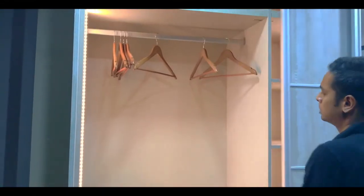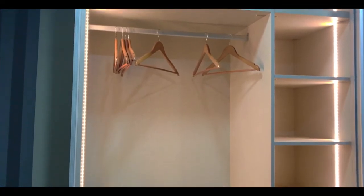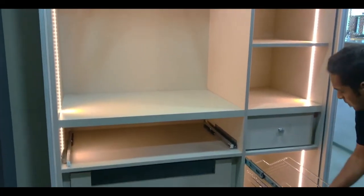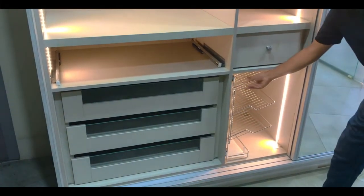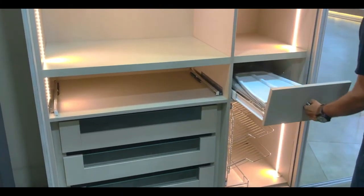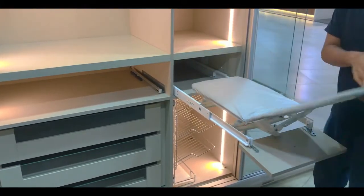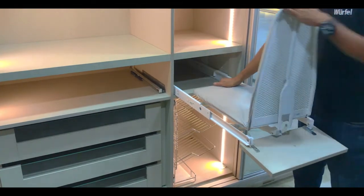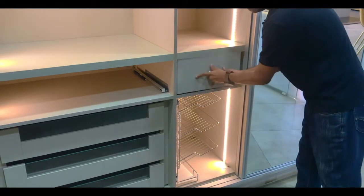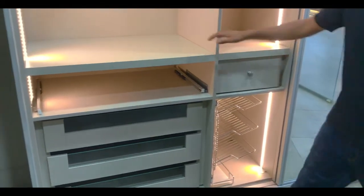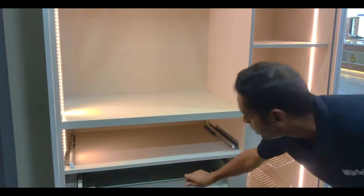The left section of the sliding wardrobe has a regular hanger rod at the top as well as a space for storage. At the bottom right we have a vertical shoe rack and just above the vertical shoe rack we have an iron board which is integrated into the cabinet. On the bottom left we have three internal drawers with glass profiles.